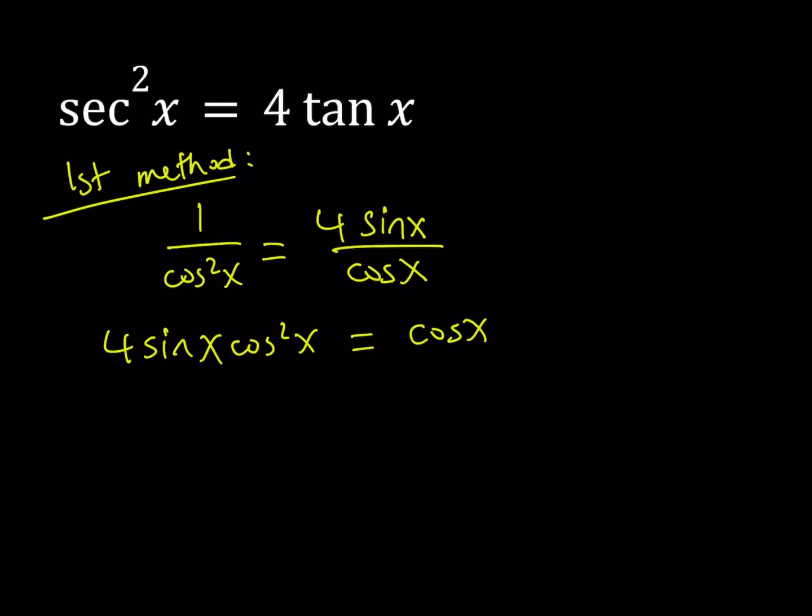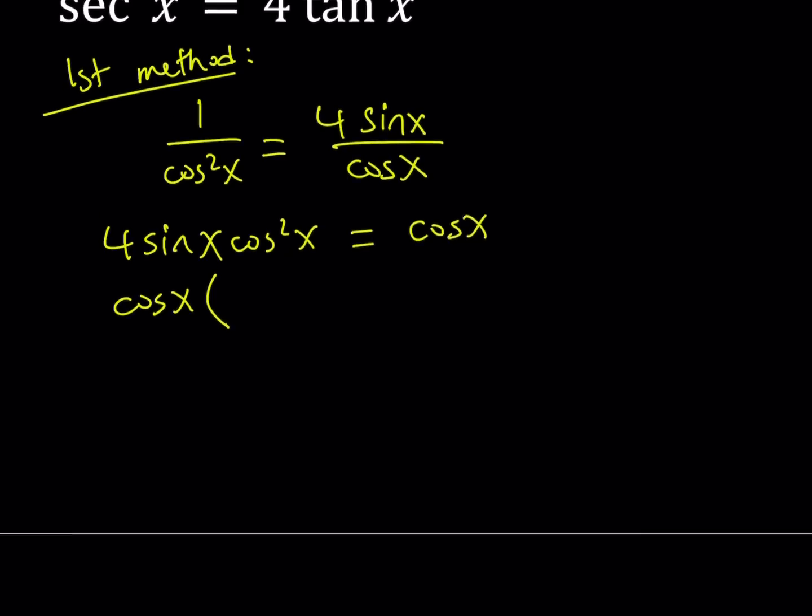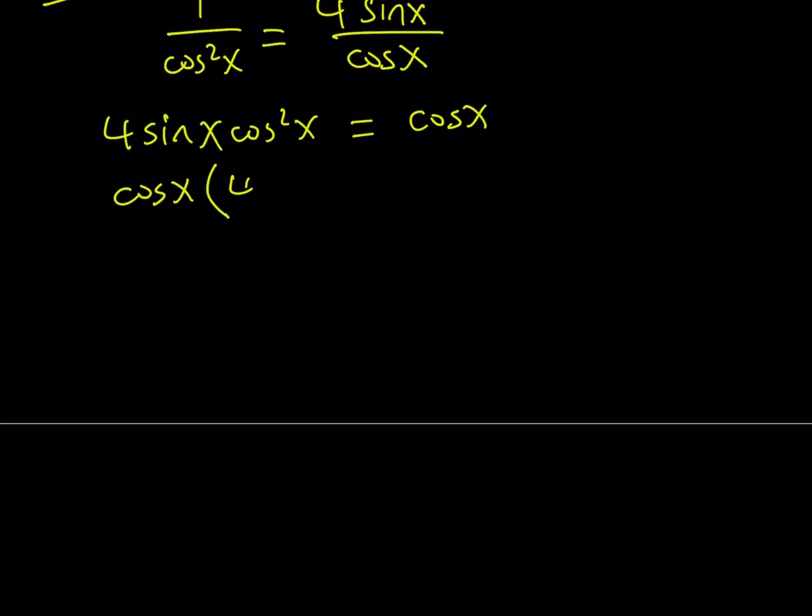Again, we're not canceling out anything, but putting everything on the same side would be a good idea. And then we can take out cosine x, which is a common factor that gives us 4 sine x cosine x and then minus 1 for cosine x. And the whole thing equals 0.